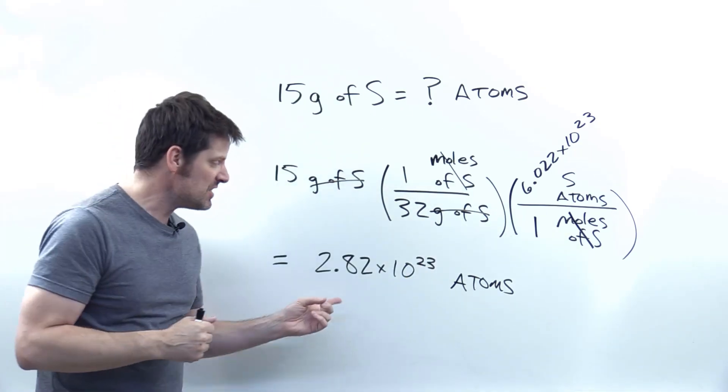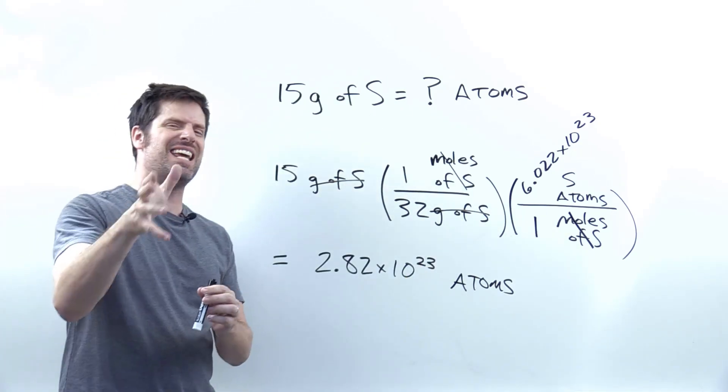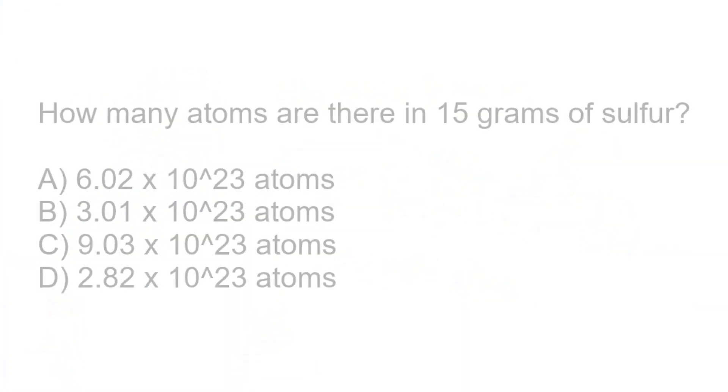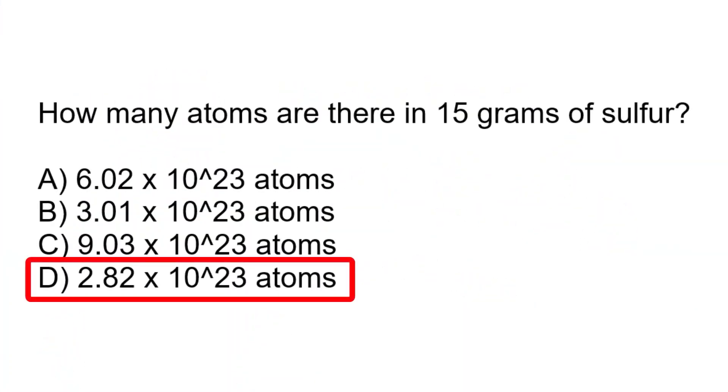The final answer then comes to this number right here. 2.82 times 10 to the 23rd individual sulfur atoms, which as you can see, lines up with option D.